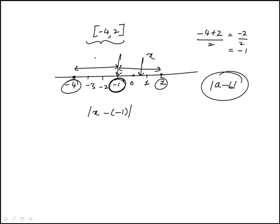So it doesn't matter which side the x is, its distance from the midpoint has to be less than or equal to 3 because it has to be three units or less on both sides.